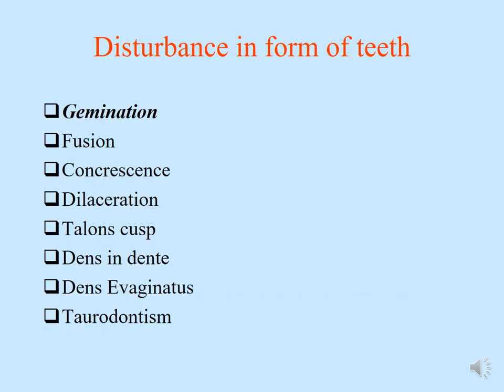Moving on to disturbances in the form of teeth. Under this category we have gemination, fusion, concrescence, dilaceration, talon cusp, dens invaginatus, dens evaginatus, and taurodontism. I am going to go through each one and explain them one by one.